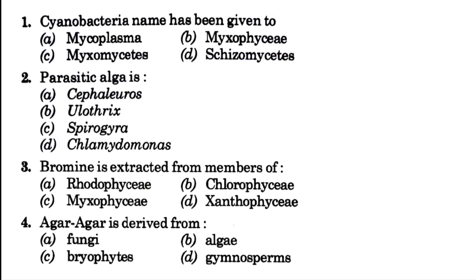Option A is Mycoplasma, option B is Myxophyceae, option C is Myxomycetes, and option D is Myxomycetes. The answer is option B, that is Myxophyceae, which is blue-green algae.